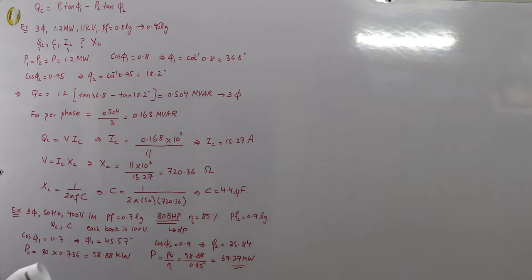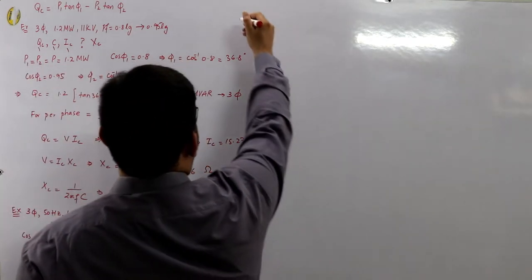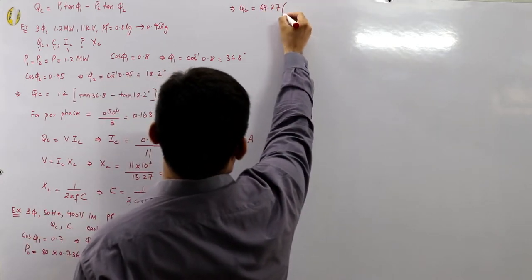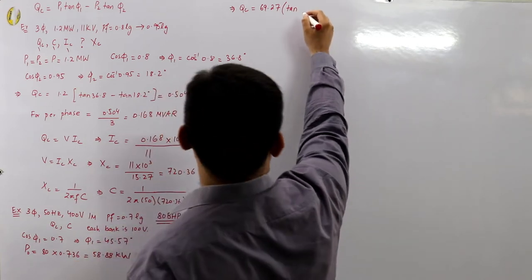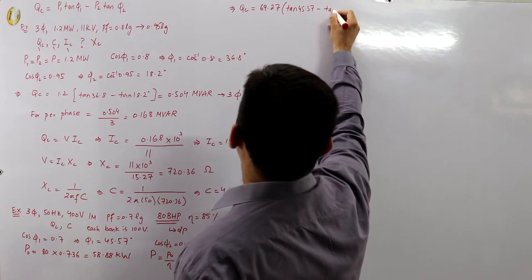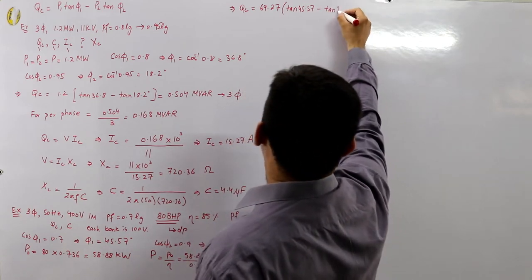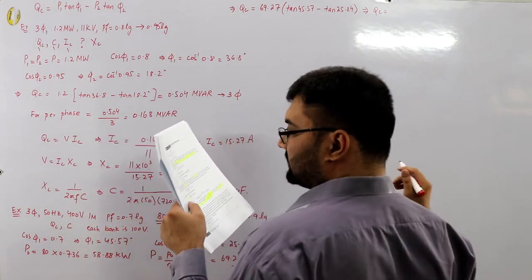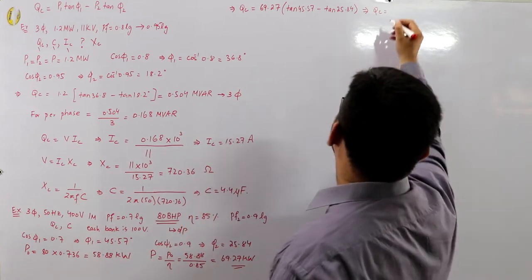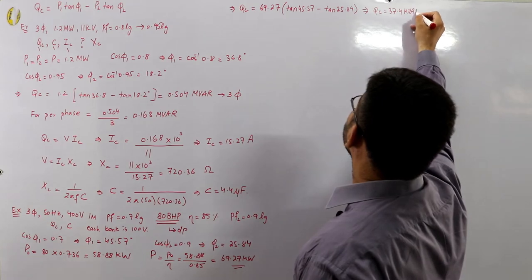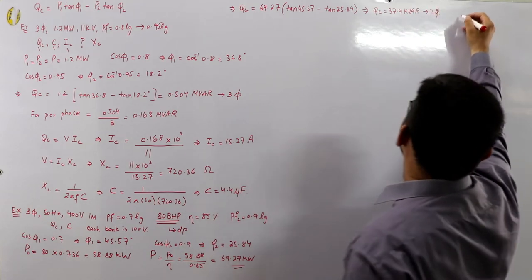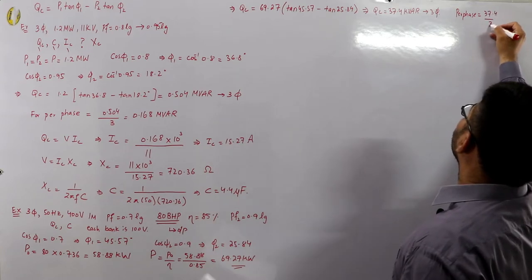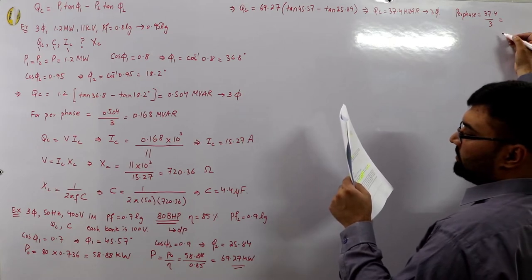QC = 69.27 × (tan 45.57° − tan 25.84°) = 37.4 kVARs for three phase. For per phase: 37.4 / 3 = 12.46 kVARs.